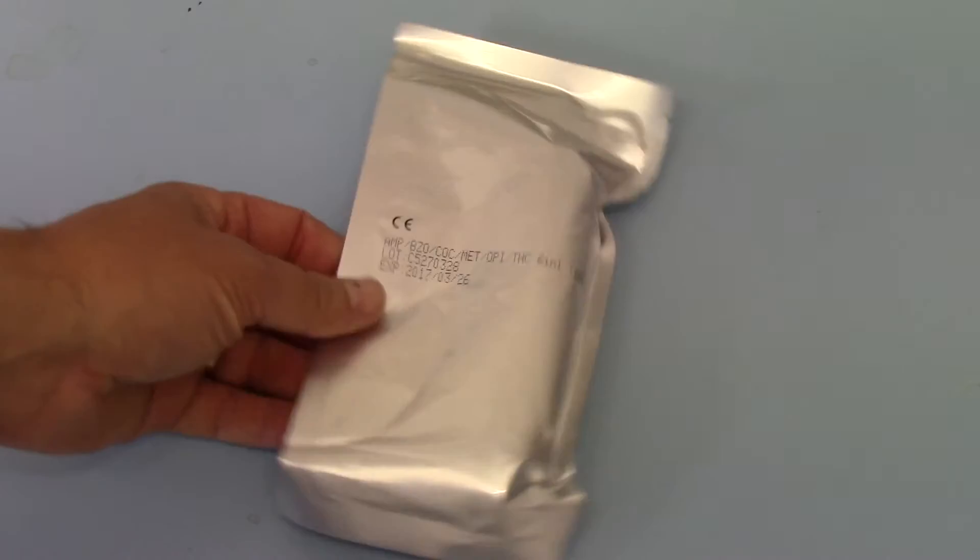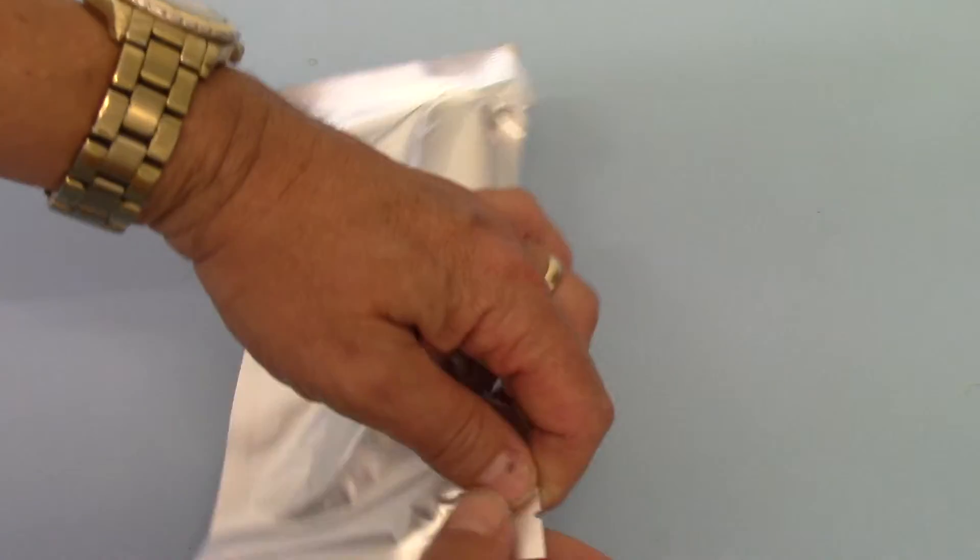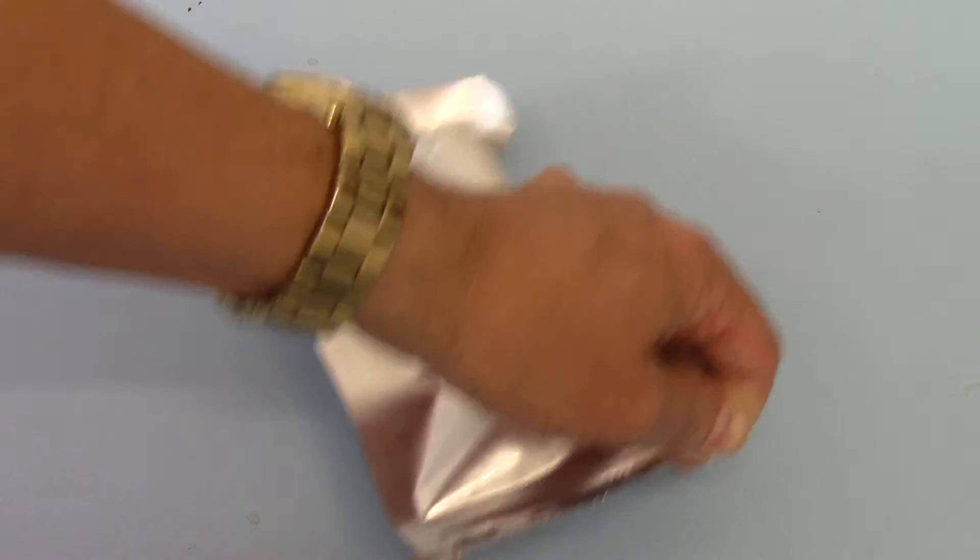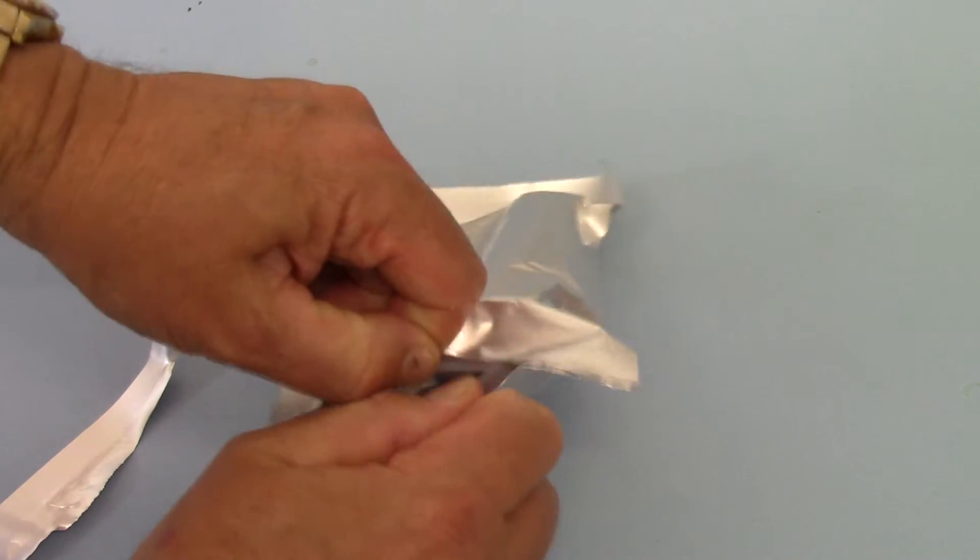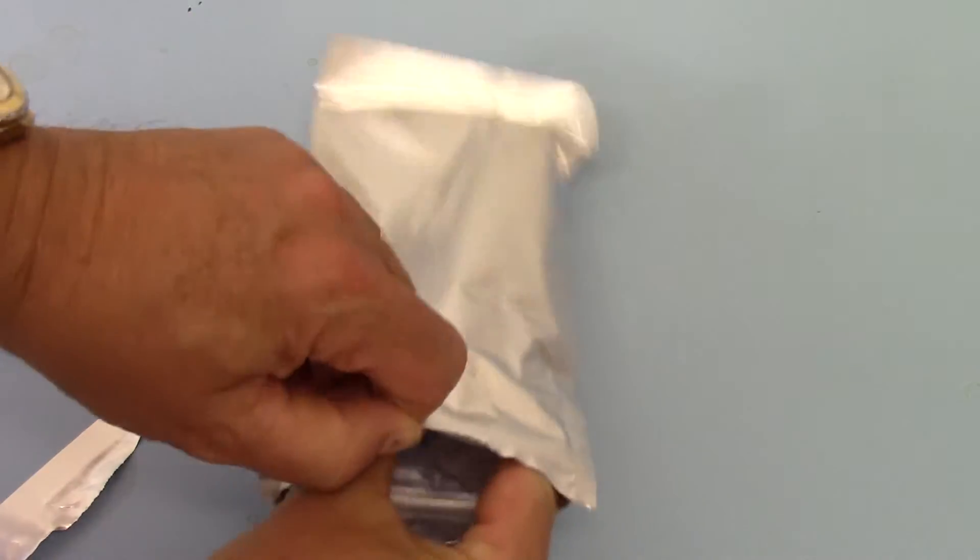This is the packaging we've demonstrated to you in part one and we're going to open one of these now just to demonstrate what you actually get. The foil tears open and then you've got a resealable pouch.